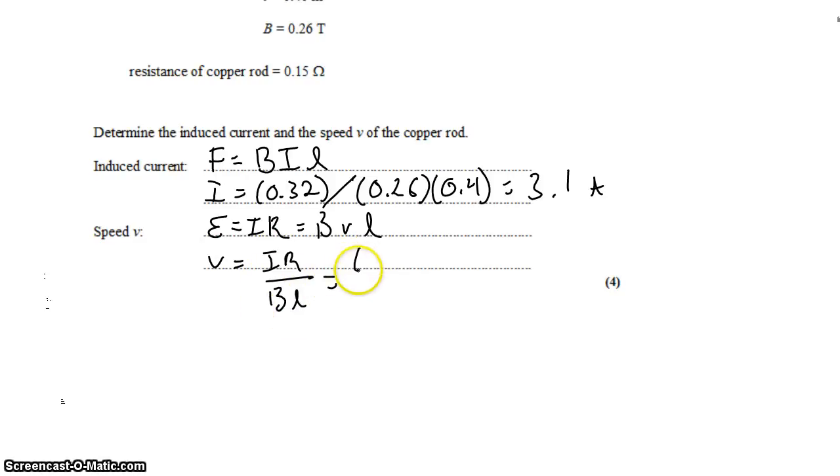We just found the current, 3.1. The resistance is given. And BL we know as well. Which works out to 4.4 meters per second.